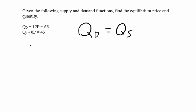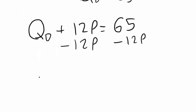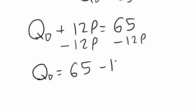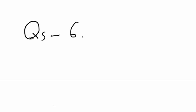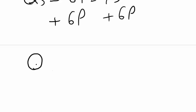The equality Qd equals Qs at equilibrium still holds, but we need to solve for the quantities first. Starting with the demand function, subtracting 12p from both sides gives Qd equals 65 minus 12p. For the supply function, adding 6p to both sides gives Qs equals 43 plus 6p.